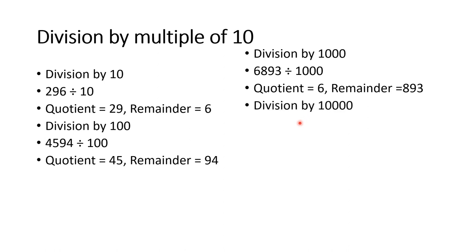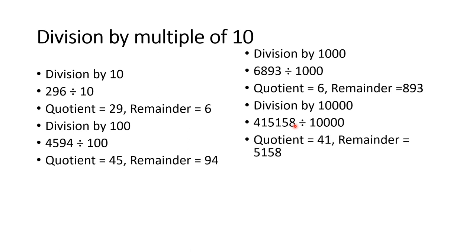Division by 10,000: since there are 4 zeros, we hide up to the thousands place. For example, 4,15,158 divided by 10,000 — we hide the last 4 digits 5158, so 41 is our quotient and 5,158 is our remainder.